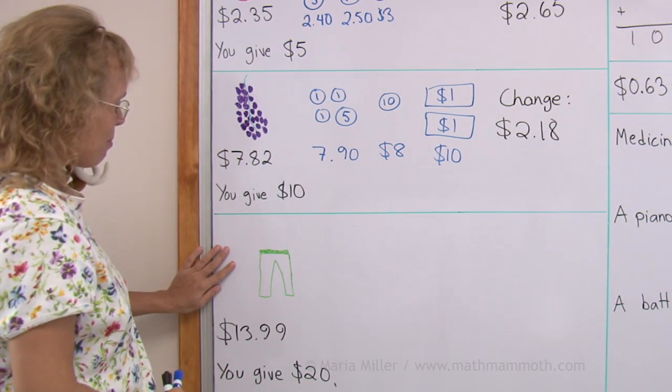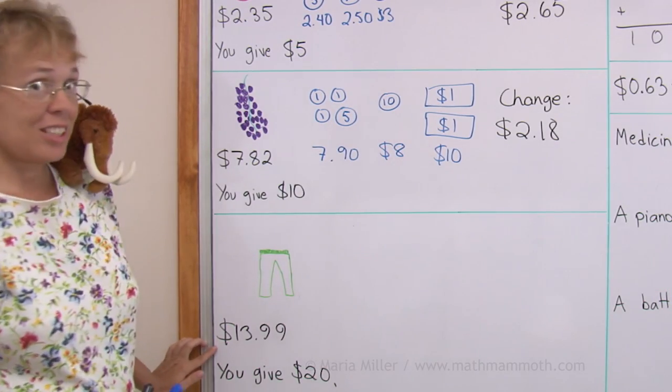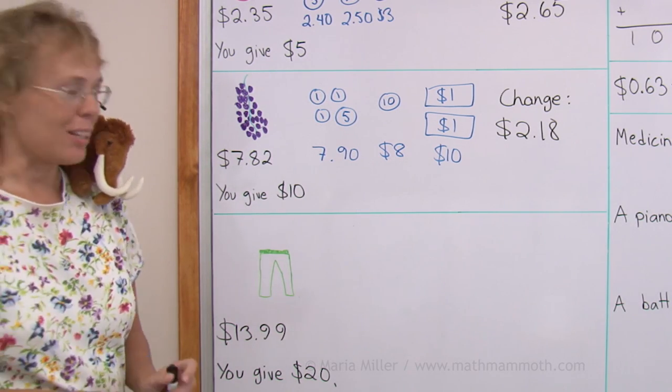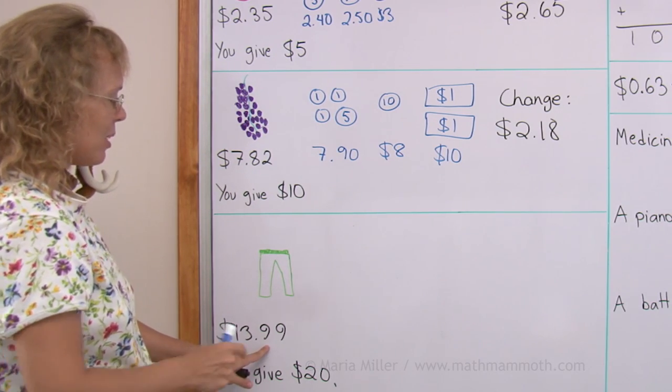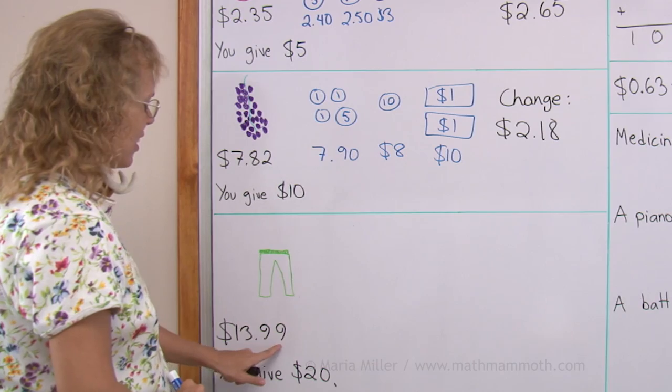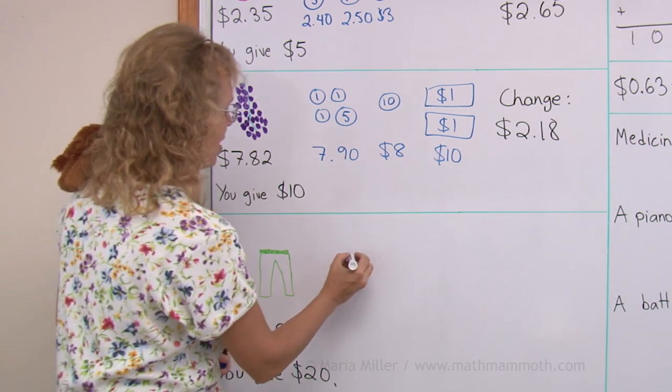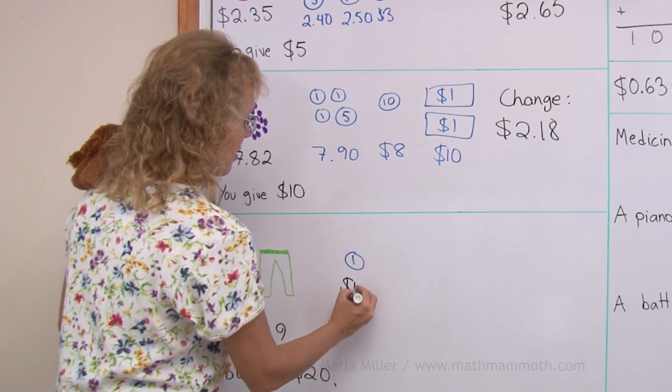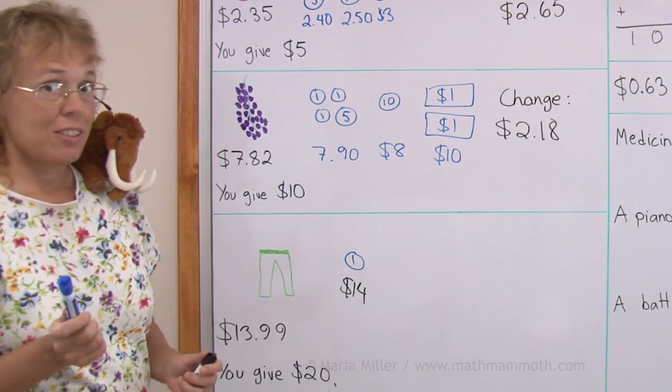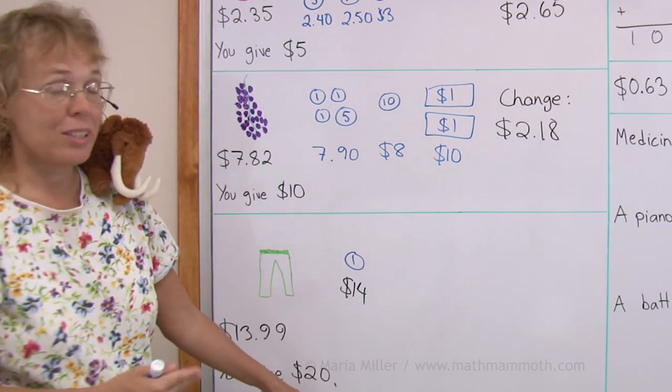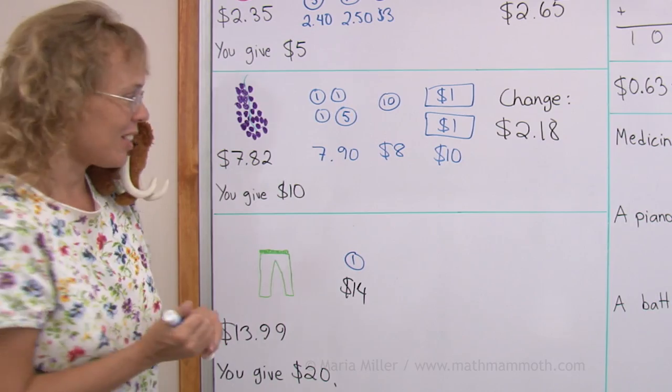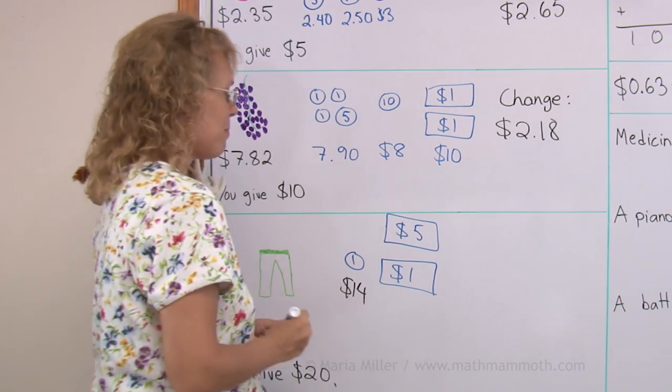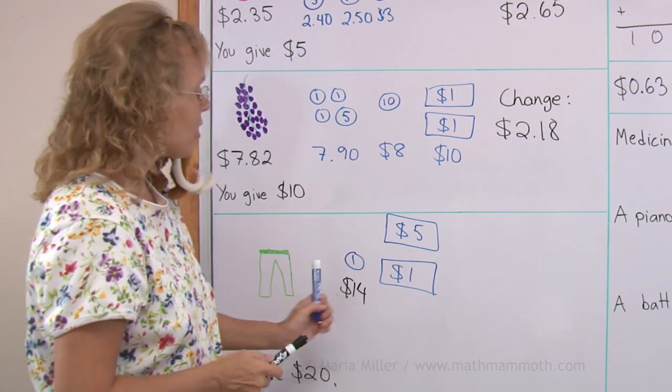One more time. There's some pants and they cost $13.99. You give $20. We'll do the same thing. We count up from this amount towards $20. So there's $13.99. First I will just add 1 cent, and then I am at $14.00. After that it is pretty easy. $14 and $20, I just need $6 more. So $5 and $1. And that makes it. The change is therefore $6.01.